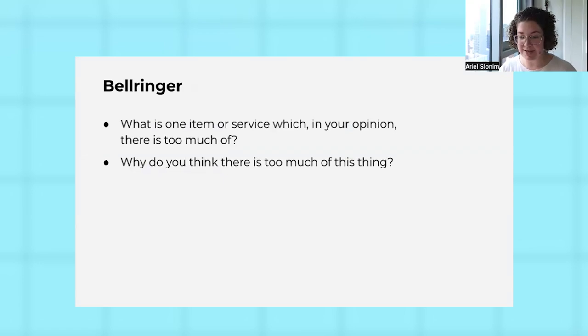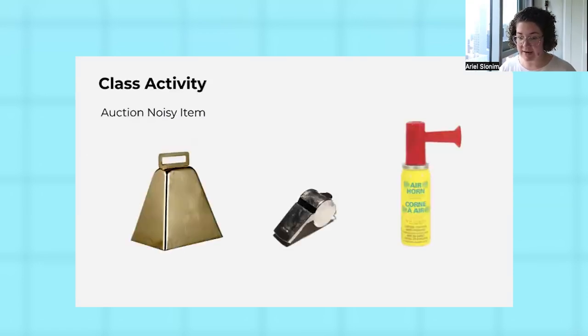We have a great interactive activity for you to auction a noisy item. If you joined us at CEE, you would have gotten a cowbell, but you can auction off any noisy item. You might want to warn whoever's teaching class next door, but you need to let students know that they'll be able to use whatever item you auction off during class. The idea here is to allow students to make a negative externality, and we're going to revisit that later on in the lesson.